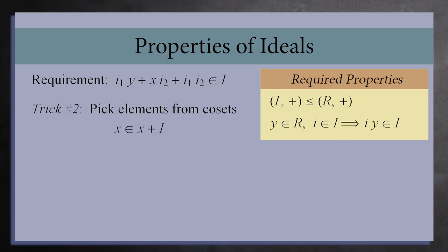Next, let's pick the element x from the coset x + I, and then pick any element y + I₁ from the second coset. Like before, the product of these two elements should be in the coset xy + I. This means x times (y + I₁) should equal xy + I₂ for some element I₂ in the ideal.